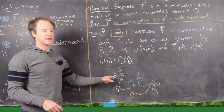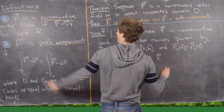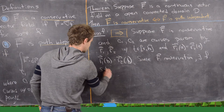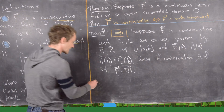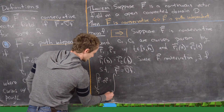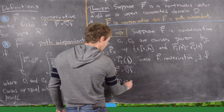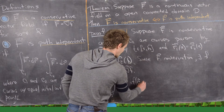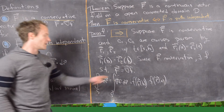Since F is conservative, by definition there exists a potential function little f such that capital F equals the gradient of little f. Taking the line integral of F over C1 gives the line integral of the gradient of f over C1, and by the fundamental theorem of line integrals this equals f evaluated at r1(b) minus f evaluated at r1(a).